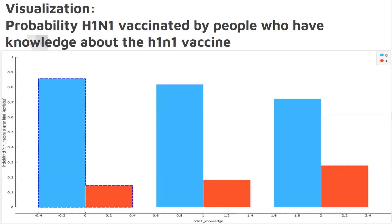The instructor says: you are explaining exploratory data analysis but you are not aware of the problem. You are talking as if you are dealing with a regression problem, which is not the case. Furthermore, the instructor notes that the dataset has not been presented at all — no sample data has been shown during the exploratory data analysis presentation, which is very strange.